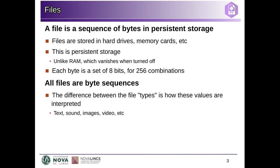Regardless of what the file is — what interpretation we give to the file — each file is always a sequence of bytes. Each byte contains eight bits, eight zeros and ones. So each byte has 256 combinations and you can think of files as series of numbers between zero and 255. The only difference between different file types, whether it's text or sound, is just in how we interpret the data. If interpreted in the wrong way, it will not be very meaningful.